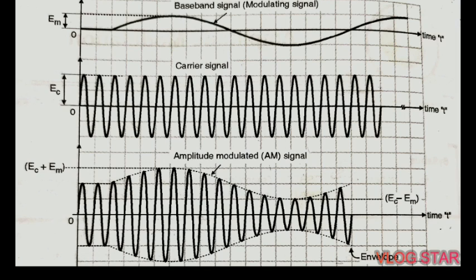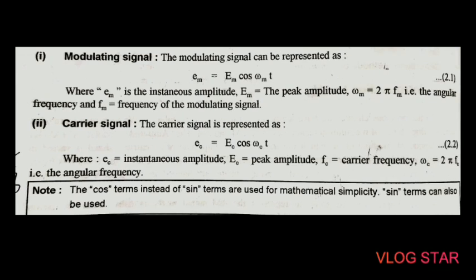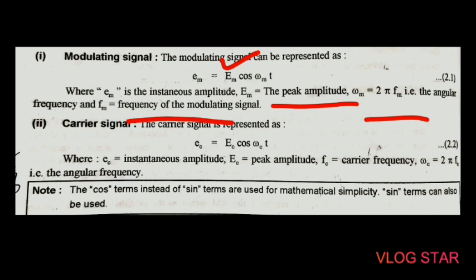The peak amplitude here is capital E_m, so the value of e_m is E_m cos(ω_m t), where E_m is the peak amplitude. Then ω_m = 2π f_m, which is the angular frequency, and f_m is the frequency of the modulating signal.